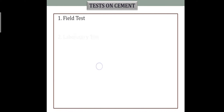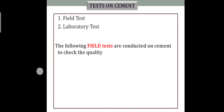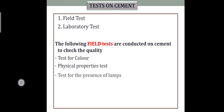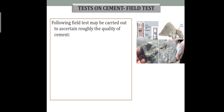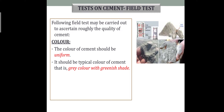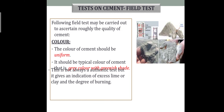Tests on cements include both field tests and laboratory tests. In field tests, we test for color, physical properties, and lumps. For the color test, you should take the cement and see that the color is uniform. The color should be gray with a greenish or blackish shade.